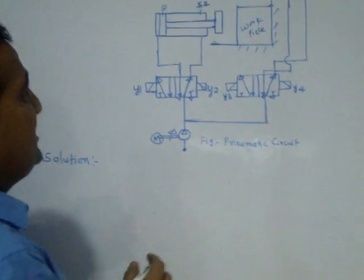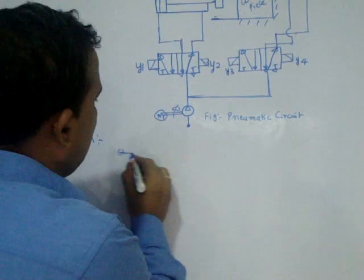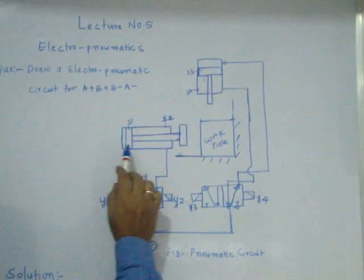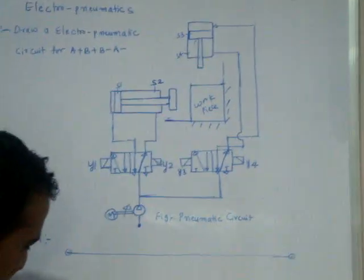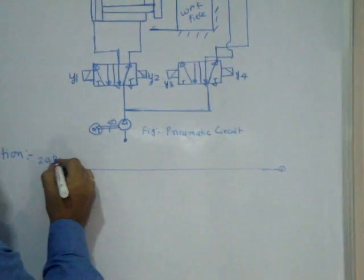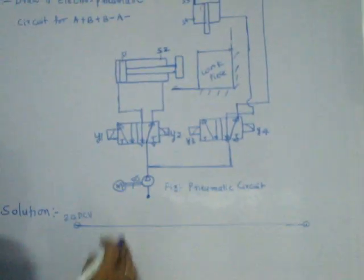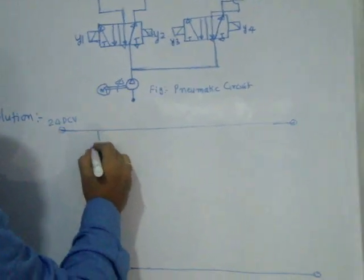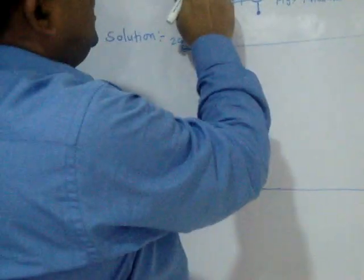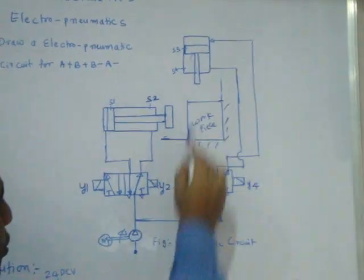I'll start here — there is a problem. My main objective is: the first cylinder A plus has to actuate. This is 24 V DC, this is 0 V DC. When the piston is at S1, Y1 should turn on. When it goes to S2, Y3 should turn on.